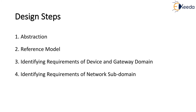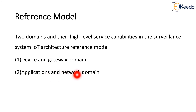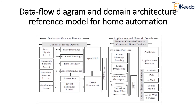The design steps include abstraction, reference model, identifying requirements of the device and gateway domain, and identifying requirements of the network sub-domain. The reference model has two domains and their higher-level service capabilities in the IoT architecture reference model for the surveillance system. It includes device and gateway domain, and applications and network domain. This is the data flow diagram and domain architecture reference model for the home automation system.